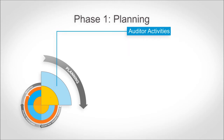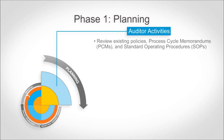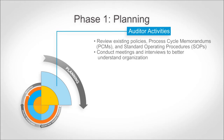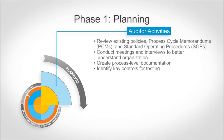During the planning phase, auditors may review business documentation including the organization's policies, process cycle memorandums (PCMs), and standard operating procedures (SOPs) identified as significant to the business processes. Auditors will also conduct discovery meetings and interviews to ask questions and gain a better understanding of the organization's processes. Finally, they will create process-level documentation and identify key controls for testing.